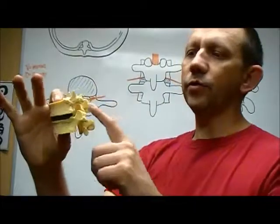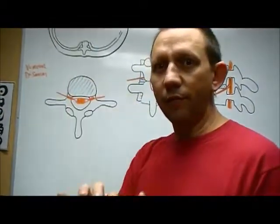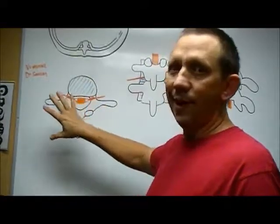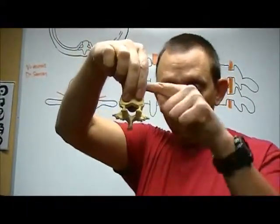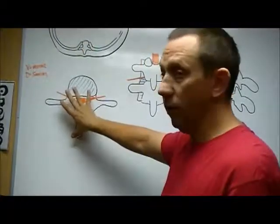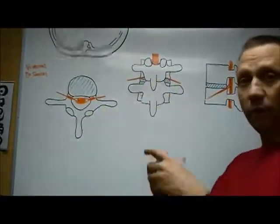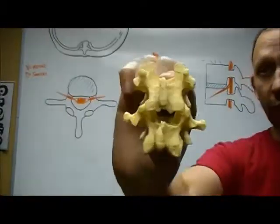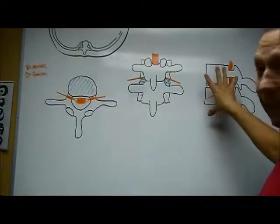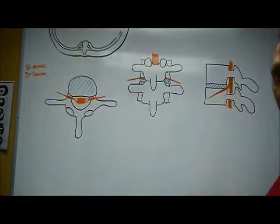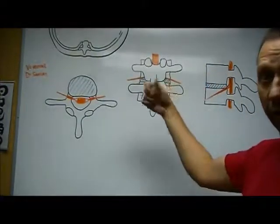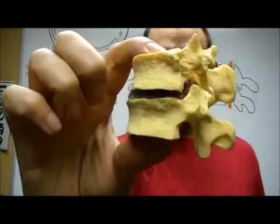That little squishy thing in the middle there — this is a model of the spine bones. These are a couple of lumbar or lower back bones. I've drawn an easy diagram of a top view looking down, showing the back and front, a back view looking straight at it, and a side view with front and back labeled.